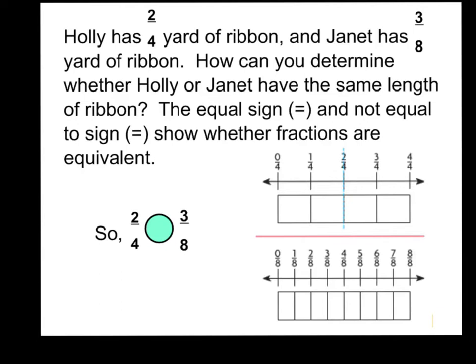So let's read this next question. It says, Holly has two fourths yards of ribbon, and Janet has three eighths yard of ribbon. How can you determine whether Holly or Janet have the same length of ribbon? The equal sign and not equal sign shows whether fractions are equivalent. If they're equal, it looks like this. If it's not equal, you make a slash through your equal sign. So we will show whether the fractions are equivalent or not.